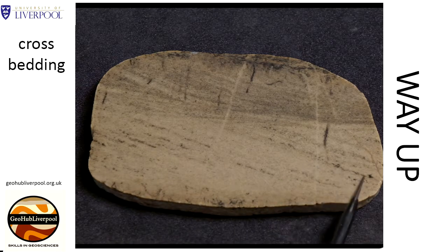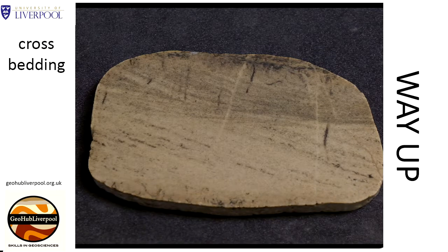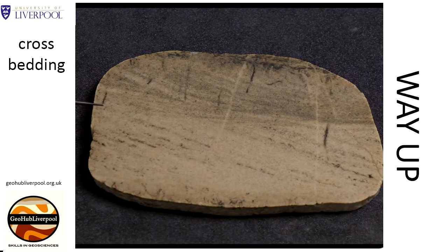Cross beds in dunes formed by wind currents are usually several metres thick. Those formed in water dunes are usually less than one metre thick.